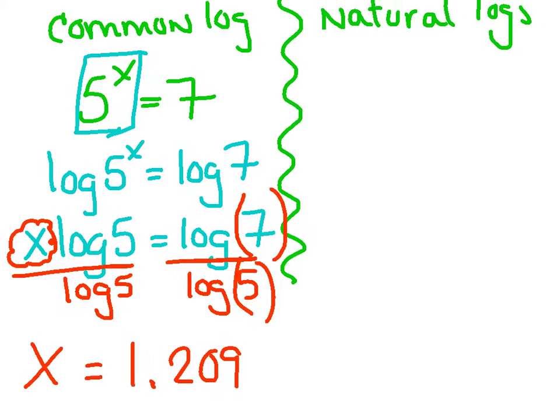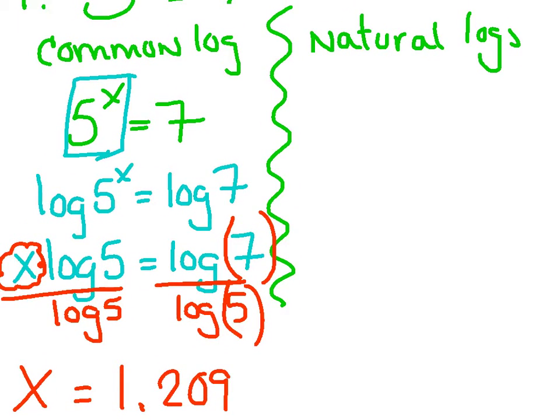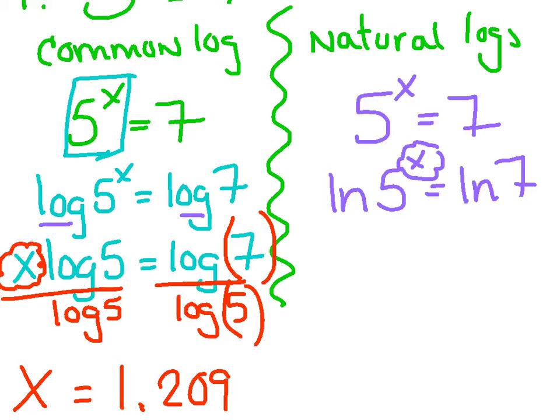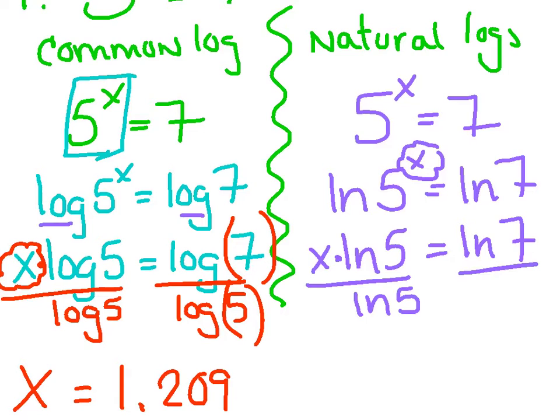I'm going to solve this same problem using natural logs. So I've got my 5 to the x equals 7. Instead of throwing that common log on both sides, I'm just going to use natural log. Watch that property. Bring that x down in front. It still says x times the ln of 5. So I'm going to divide over the ln of 5. When I type that in, obviously use ln, I get 1.209. In the end, I get that exact same answer.